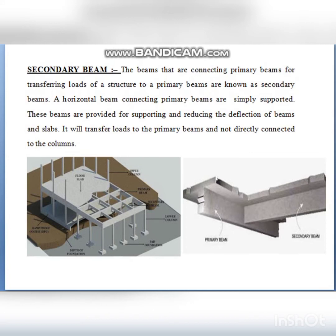The secondary beam is a horizontal beam that connects to the primary beam and is simply supported. Deflection is the bending of the beam and displacement action. The secondary beam transfers its load to the primary beam, and the primary beam then transfers the load to the column.